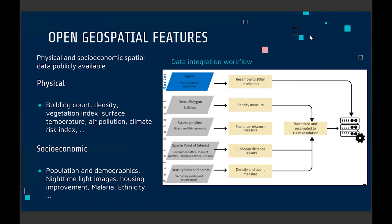We use building count density, vegetation, and other socioeconomic data sources, mixing everything together and combining a lot of open street data. Most of the point-of-interest data was mainly from OpenStreetMap, where we tried to use a lot of accessibility measures to come up with all these covariate features.